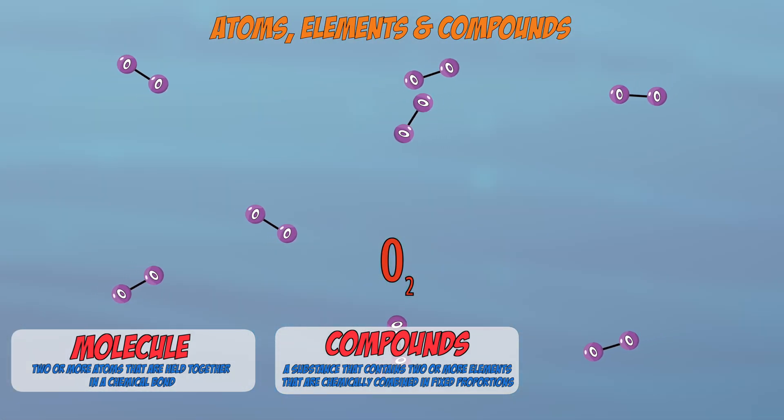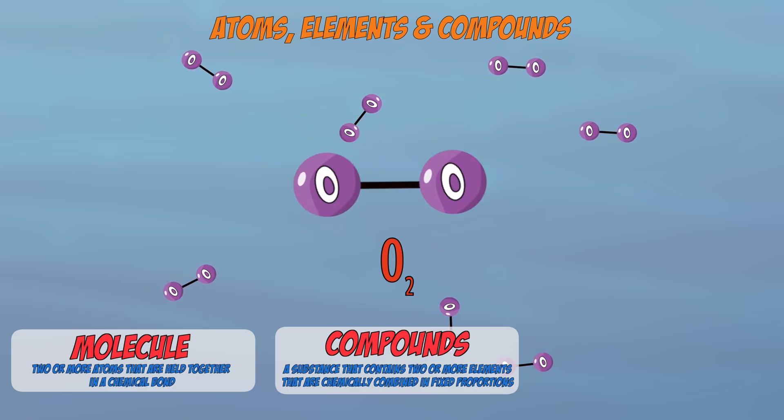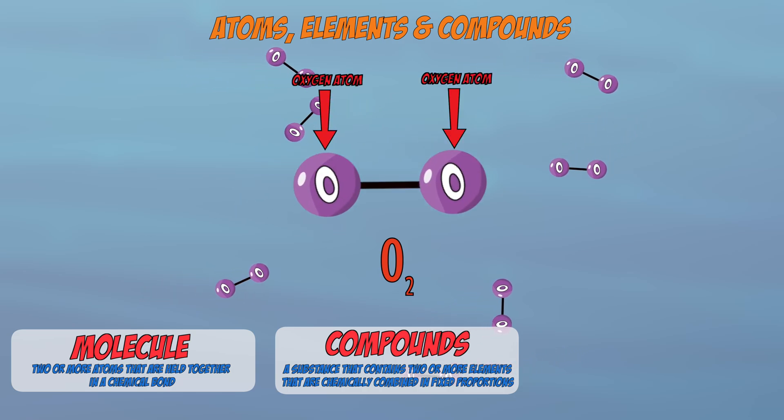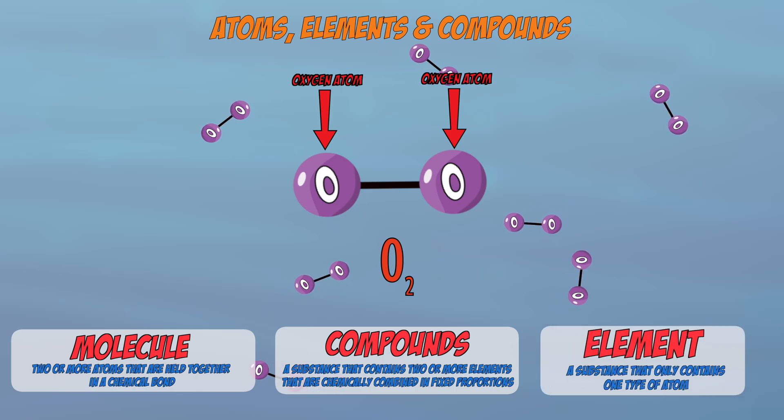So if you zoomed into oxygen gas, you would find that it's made out of molecules of two oxygen atoms bonded together. This means that it's still an element as it's only made up of one type of atom, but it exists in the form of molecules.